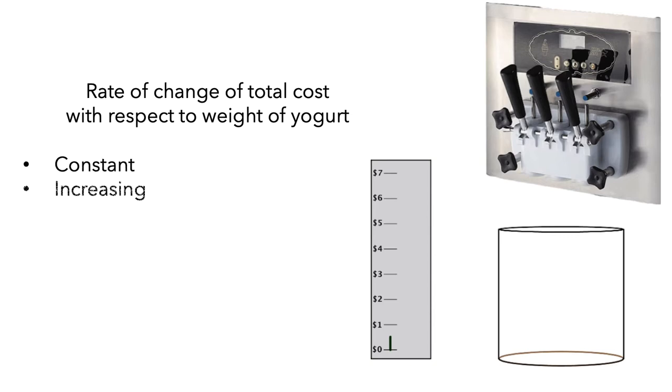you'll need to determine whether the rate of change of total cost with respect to the weight of yogurt is constant, increasing, decreasing, both increasing and decreasing, or something else. I'll start the animation now.